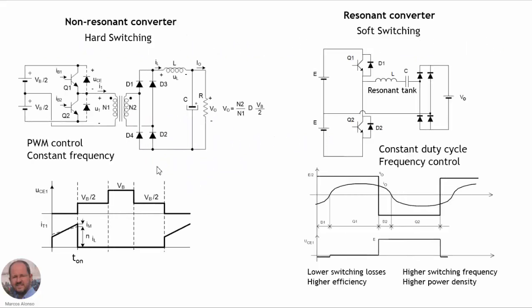There are two main types of DC-DC converters. We have the non-resonant converter — as shown here, we have the half bridge, the transformer, the rectifier, and then we have the LC filter and the load. We know that in this type of converters we don't have a resonant tank, so the typical waveforms in the switches are a square waveform for the voltage and trapezoidal waveforms for the currents. These converters operate with hard switching.